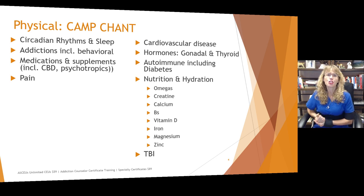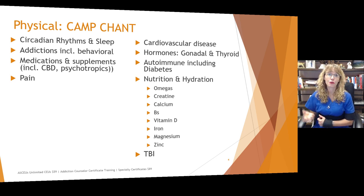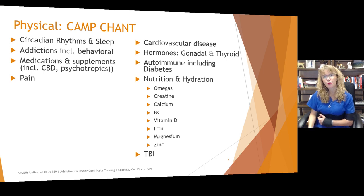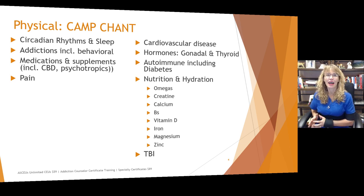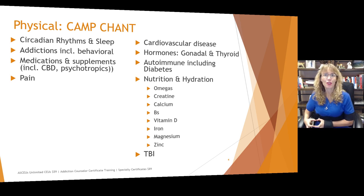Pain is so important to address because it impairs people's ability to get quality sleep. When sleep gets impaired, it affects circadian rhythms. When people are in pain, it generally means there's inflammation somewhere. Systemic inflammation contributes to mood symptoms including anxiety and depression — the research is very clear about that. Address pain and what helps manage it. Use a strengths-based perspective to help people identify what is working. Ensure they are under a doctor's care if experiencing chronic pain to ensure the highest quality of life possible. That's the CAMP part.